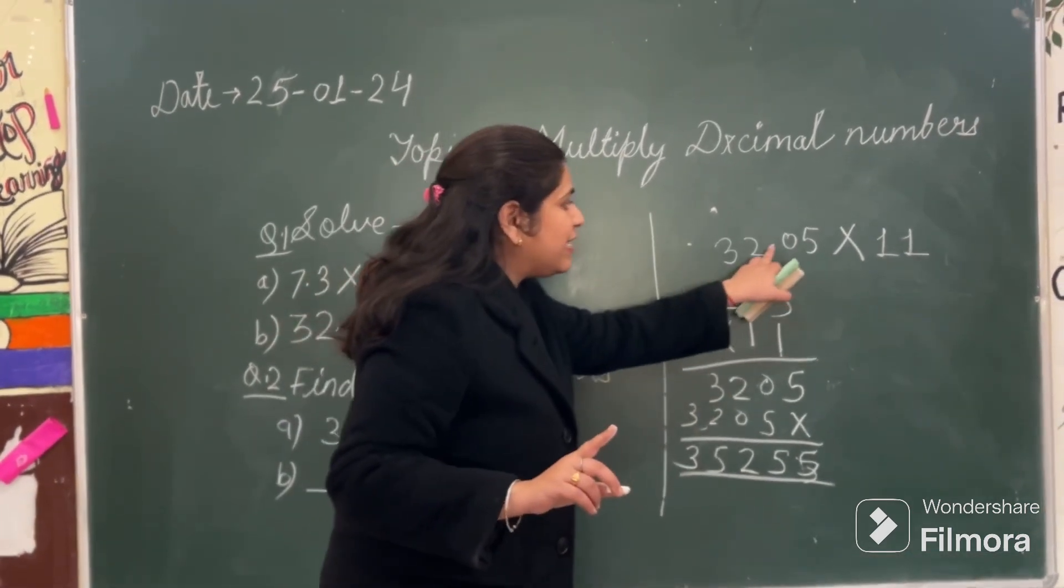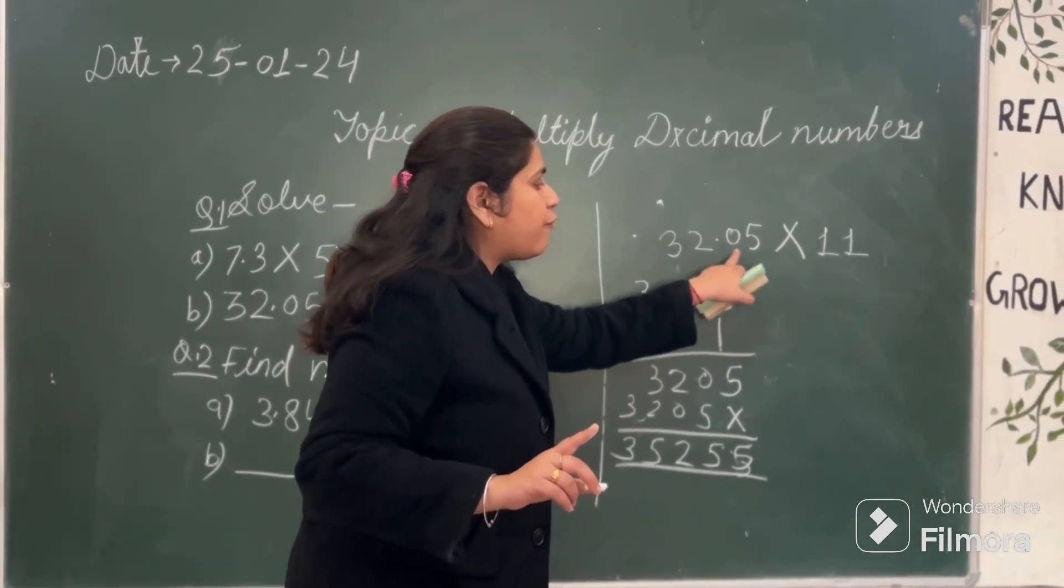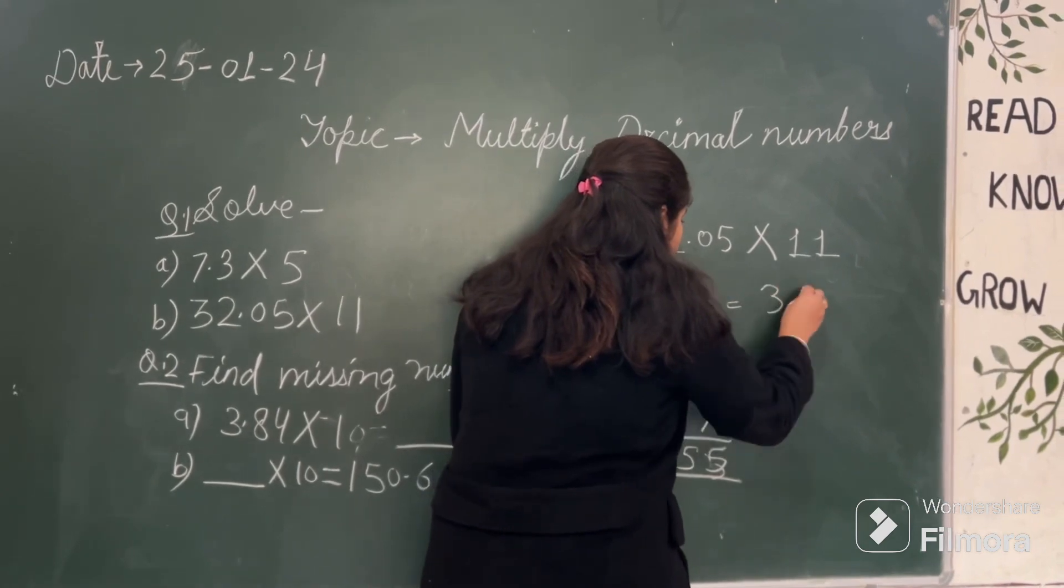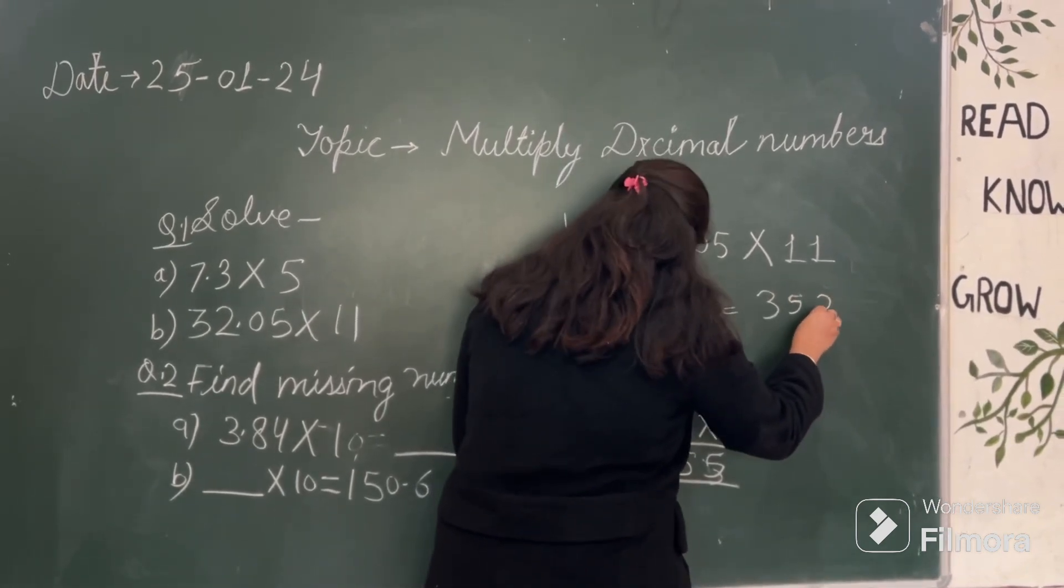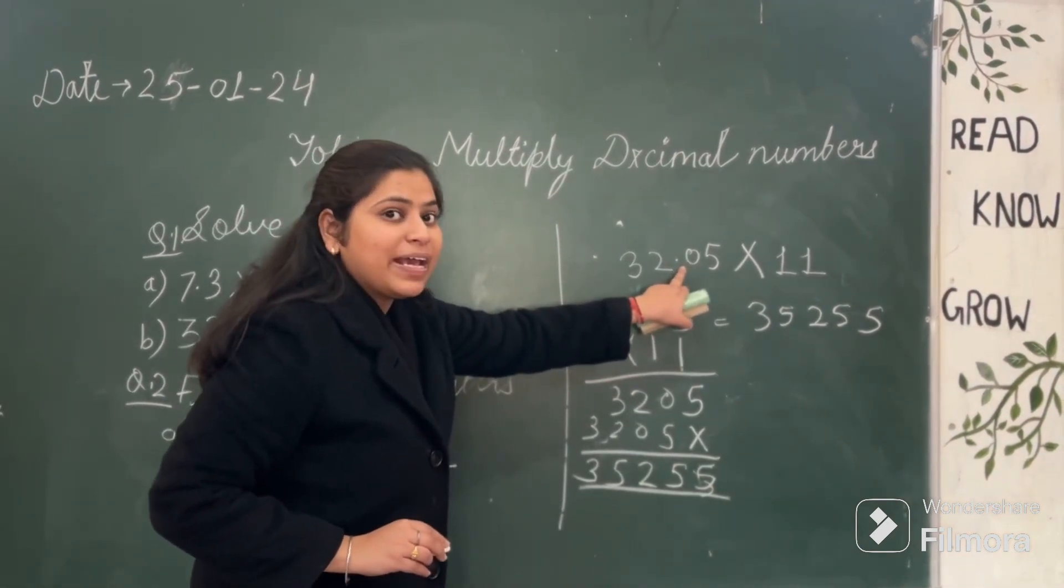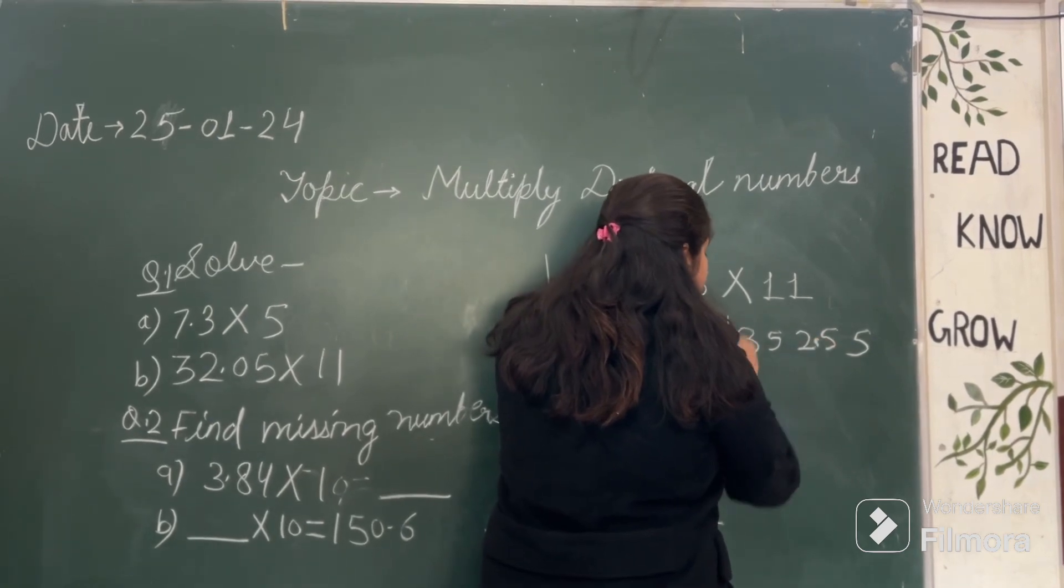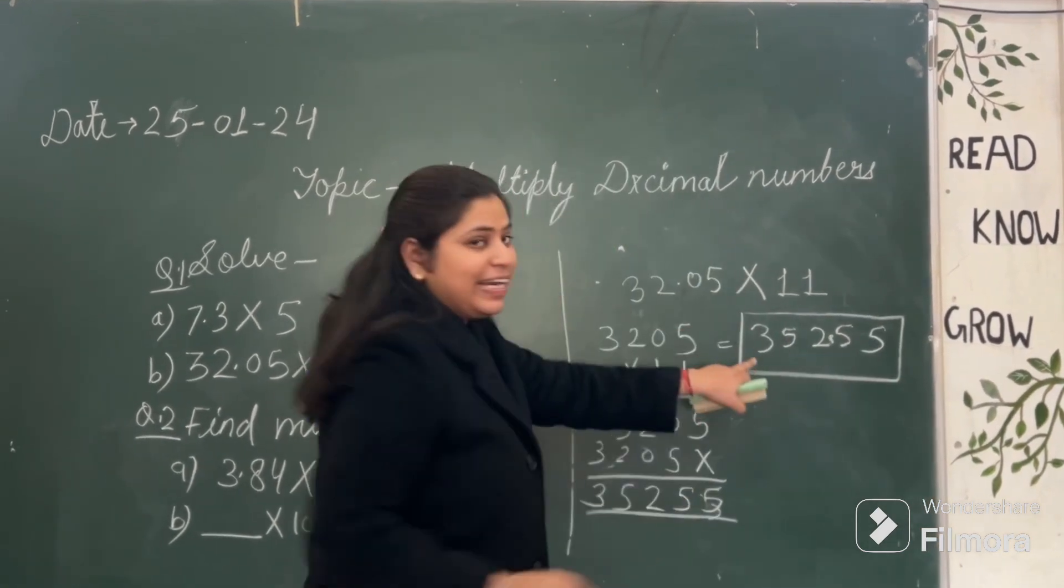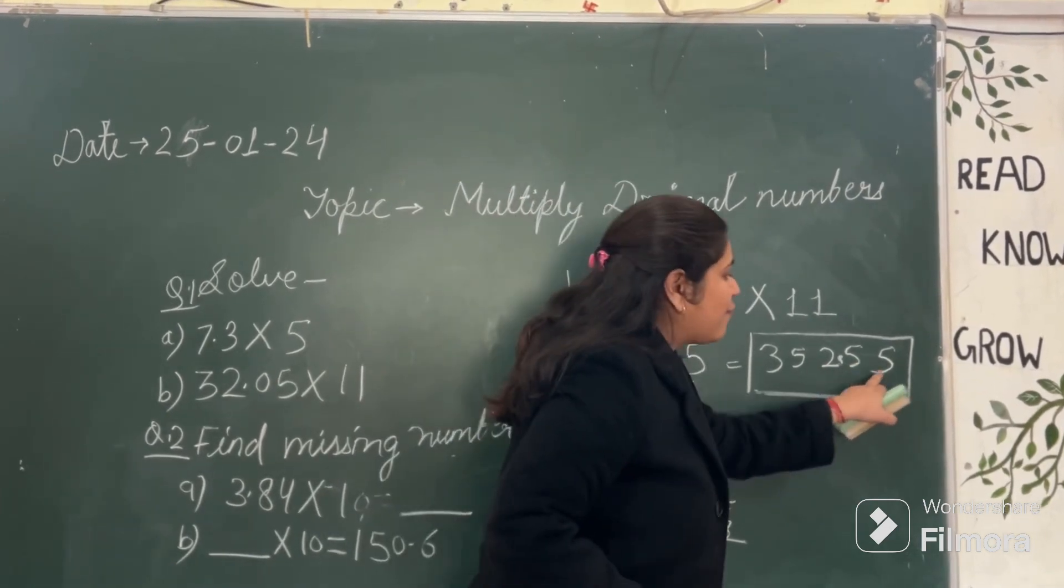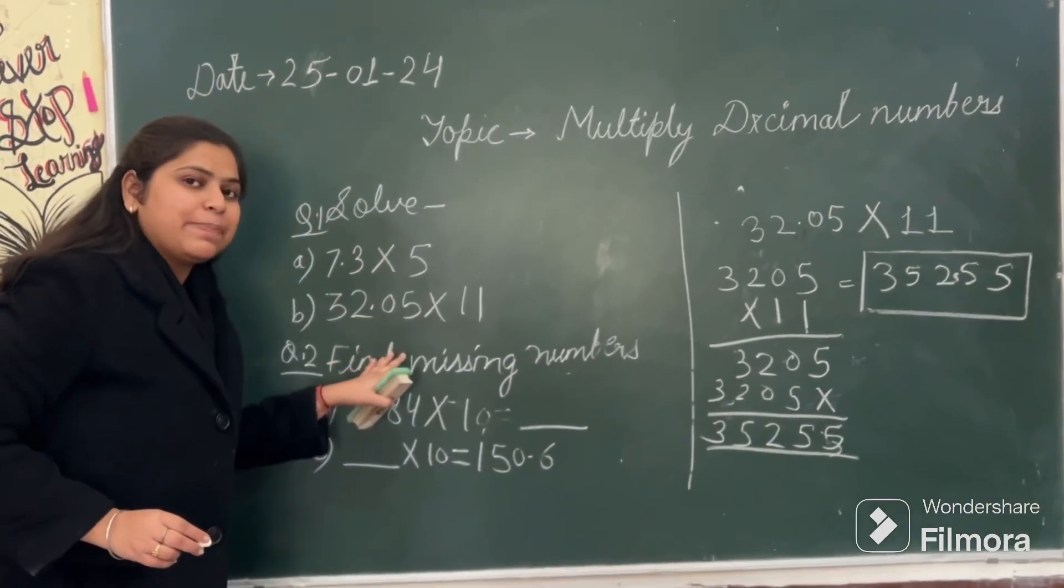But will you ignore decimal point? No. Now I will see here is my decimal point. So my decimal point is just before the 2 digits. So in my final answer, in my 35,255, the final answer I will place the decimal point just before the 2 digits. So what is your answer? Read it. 352.55. So in this way we will multiply a decimal number.